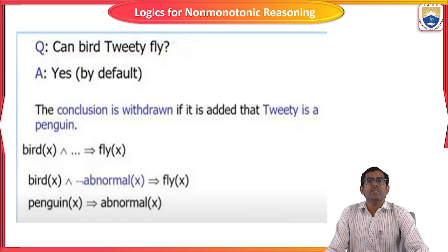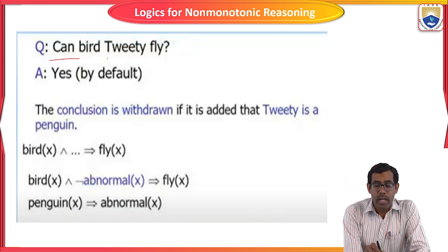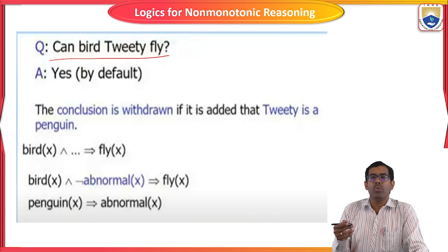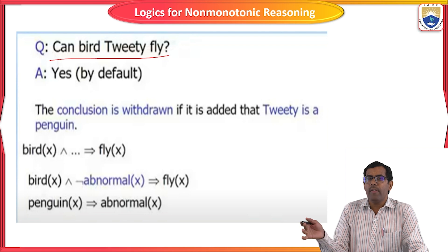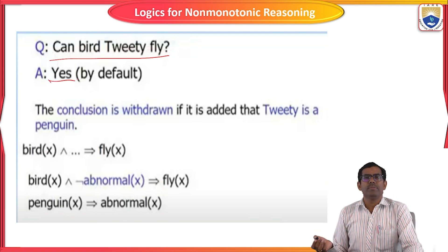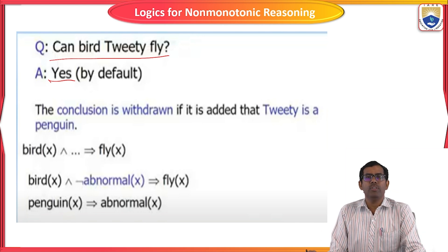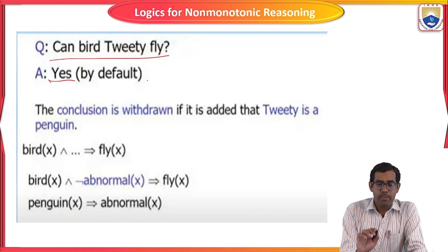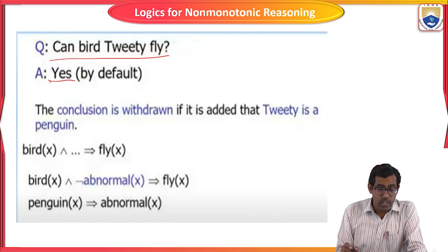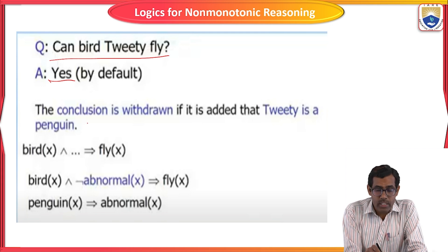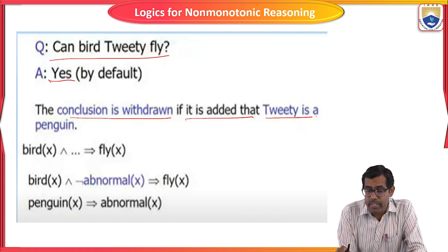Consider this example: the question is 'Can Tweety fly?' This is a problem statement. Everyone knows that Tweety is a bird — it will fly in the sky. So by default, the predicted solution is yes. Tweety is a bird, it will fly. In conclusion, we include one new logic. The conclusion is withdrawn if it is added that Tweety is a penguin.